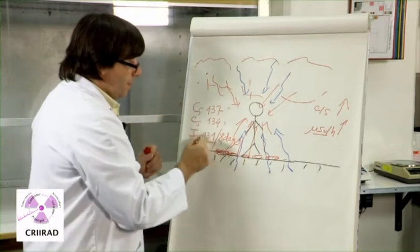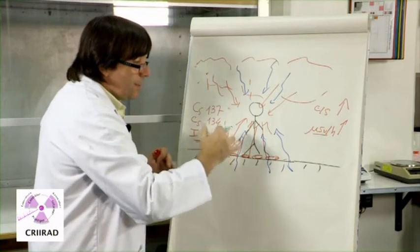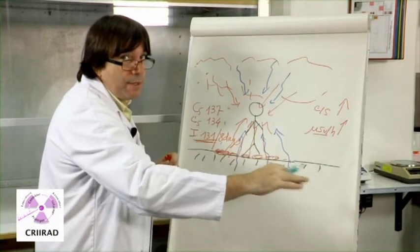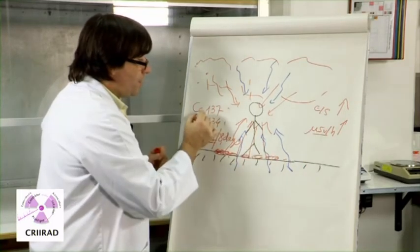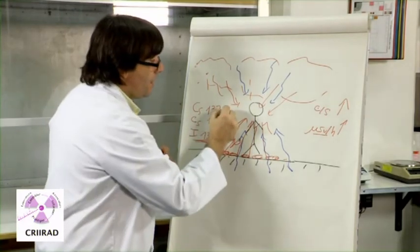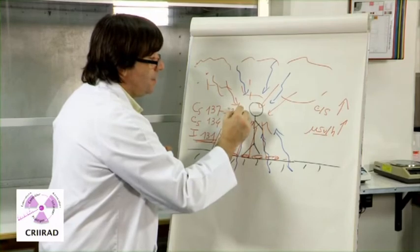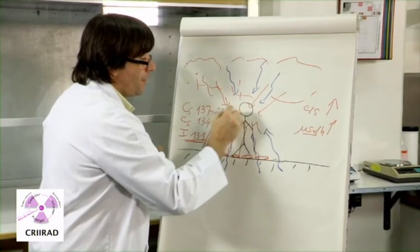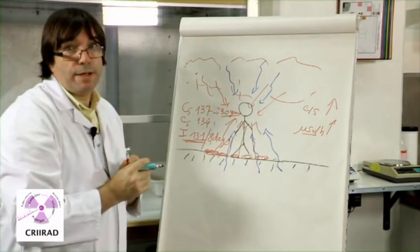So this contamination will decrease, but only very progressively. And for some other nuclides like cesium-137, whose half-life is 30 years, the contamination will last very long, in fact for decades.